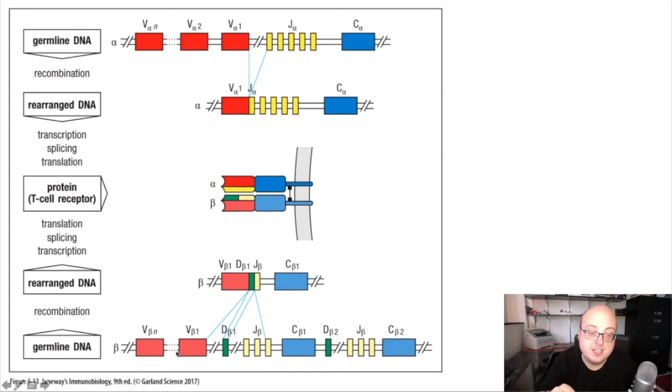Same thing with the beta chain: we combine a D and a J, add a V to that, combine it with the constant region. In particular, the diversity region, the D segment, is really well positioned to interact directly with the antigen on the T cell receptor. Nothing too new here. If you understood this for immunoglobulins, this is basically the same thing, just with a different structure.